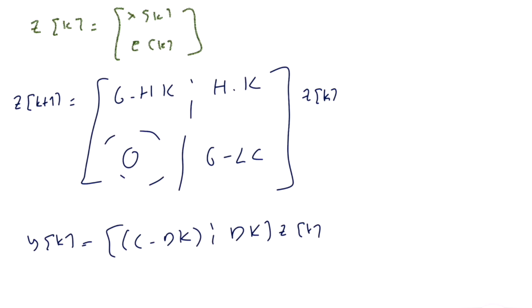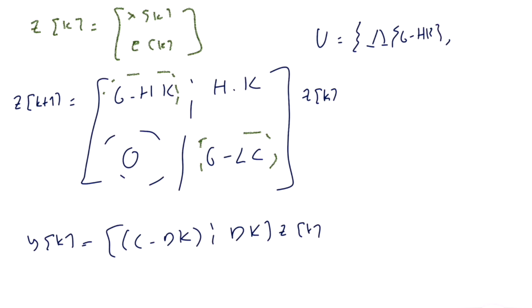Let's look at the eigenvalues of this system. The matrix has a block upper-triangular structure. From linear algebra, the eigenvalues of such a structure are the union of the eigenvalues of the diagonal blocks — that is, the union of eigenvalues of (G - H·K) and the eigenvalues of (G - L·C).